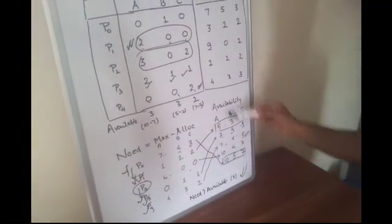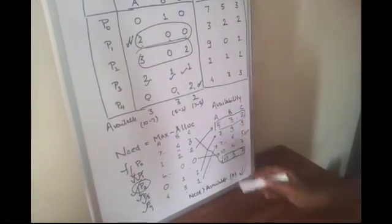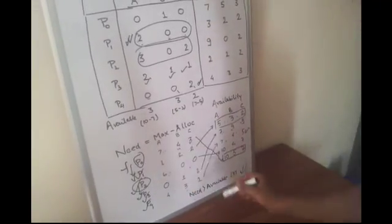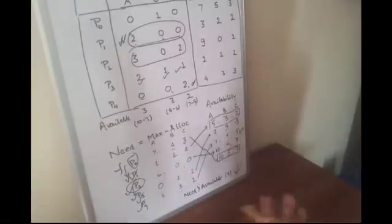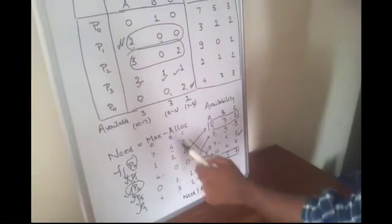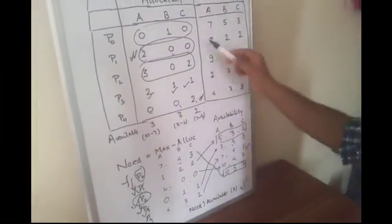Now P0 is left. We check for P0: is 7, 4, 3 less than 10, 4, 7? That's true. So P0 gets executed now. The process gets deallocated: 10 plus 0 is 10, 4 plus 1 is 5, and 7 plus 0 is 7. So again 10, 5, 7. So all processes get executed. There's no deadlock, there's no unsafe state.